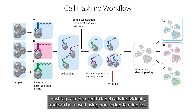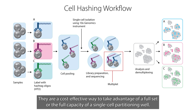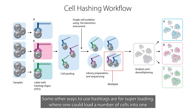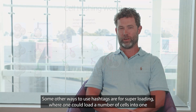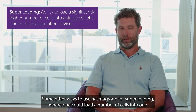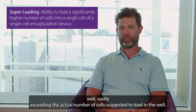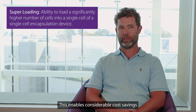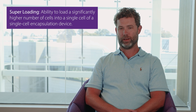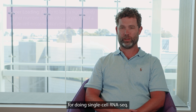Hashtags can be used to label cells individually and can be reused using non-redundant indices. They are a cost effective way to take advantage of the full capacity of a single cell partitioning well. Another way you can use hashtags is for superloading, where one could load a number of cells into one well vastly exceeding the actual number of cells suggested, which enables considerable cost savings for doing single cell RNA sequencing.